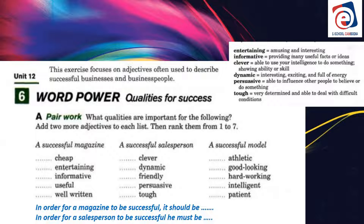We have three categories: a successful magazine, a successful salesperson, and a successful model. For a successful magazine, it must be cheap — not expensive. It must be entertaining, meaning interesting to read and look at. It must be informative, giving interesting ideas and information. It must be useful, interesting, and well-written — something people enjoy and can use in their life.